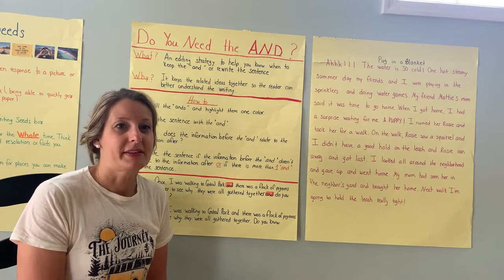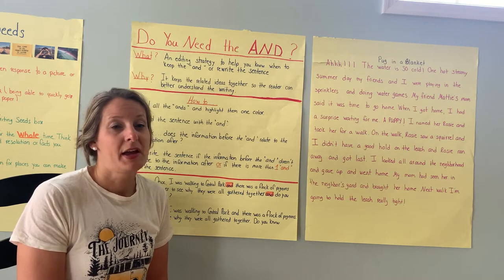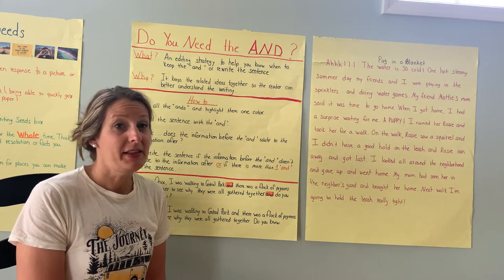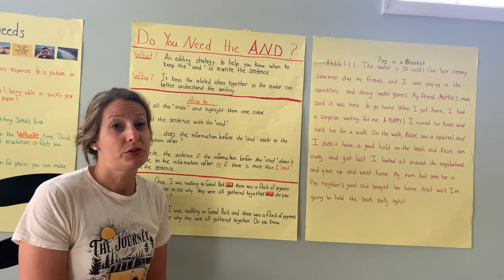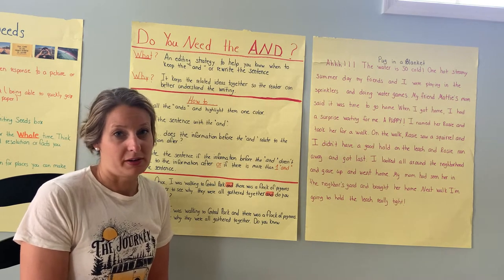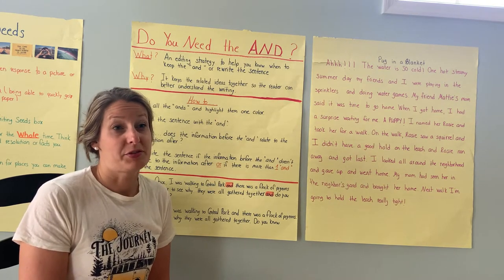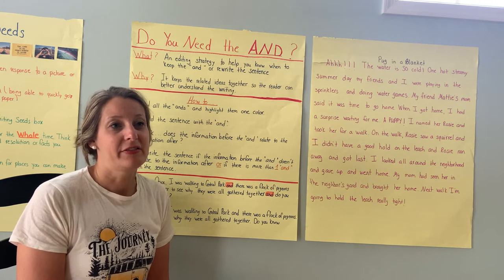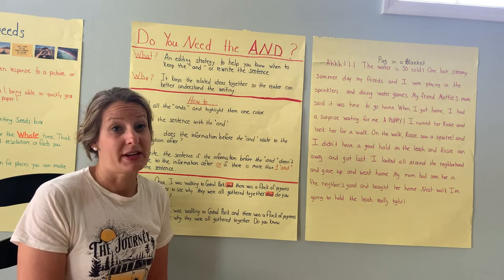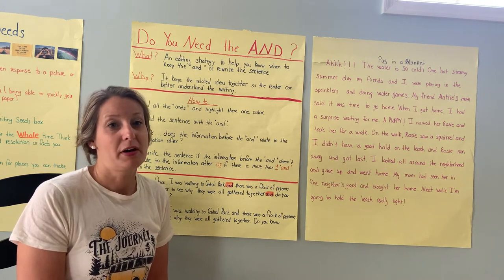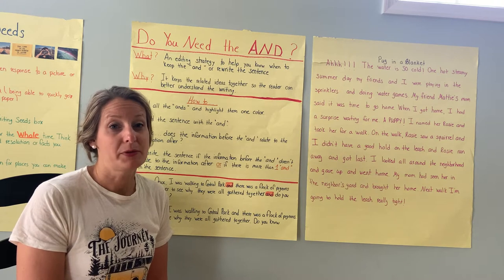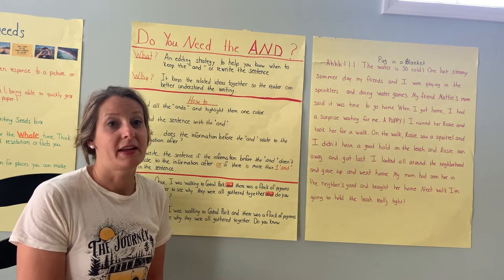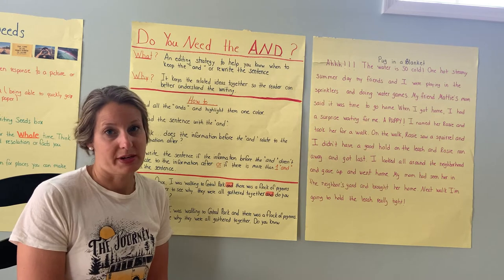The other problem is sometimes we put too many ands in our sentence and the ideas might relate, but the sentence becomes super, super long. We don't want our readers to have to read something super long because it gets hard to read and they lose interest. We want our writing to be super engaging and interesting for our readers so that they enjoy it and want to continue to read.